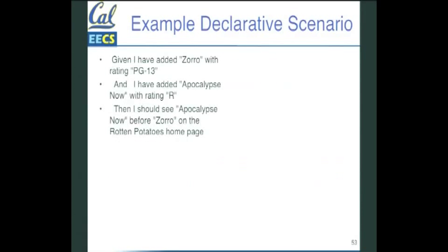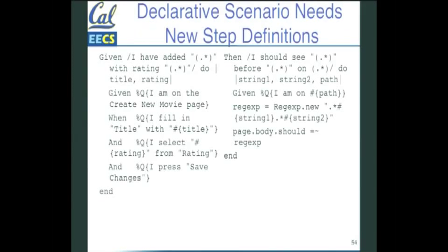Here's another way to do it. Given I have added 'Zero' with PG-13 and 'Apocalypse Now' with rating R, then I should see that one before the other. This is a more declarative way rather than listing every step to get there. The way you achieve this is that the step definitions you write can actually invoke earlier steps — think of it as method calls. If you have some imperative steps early that define these givens and whens, you can invoke them and end up with much shorter, more declarative user stories and scenarios.